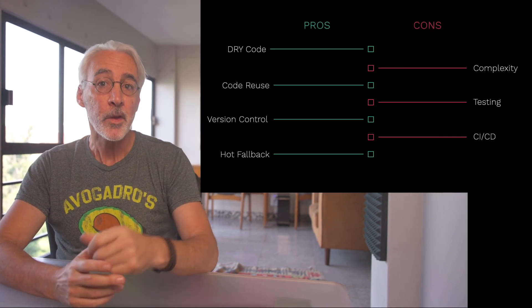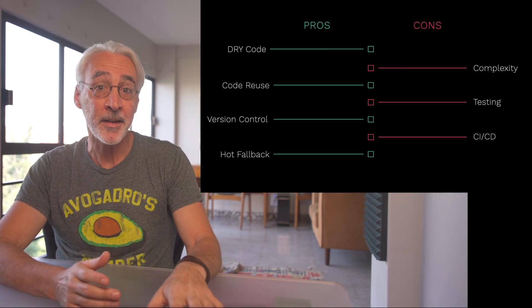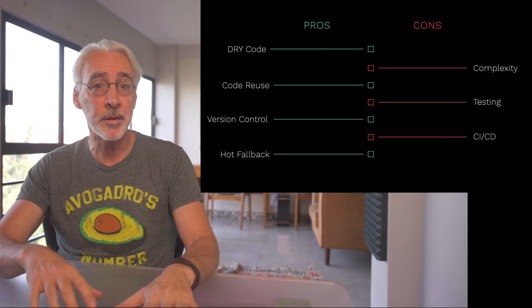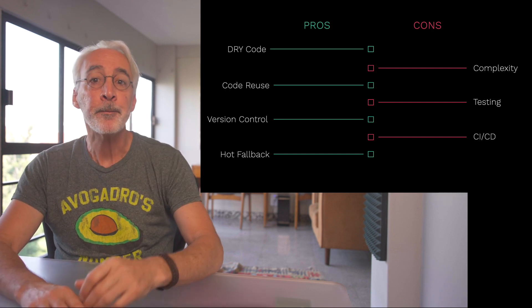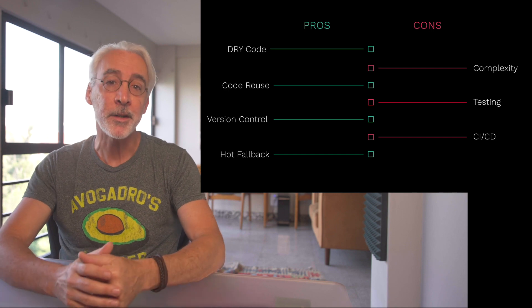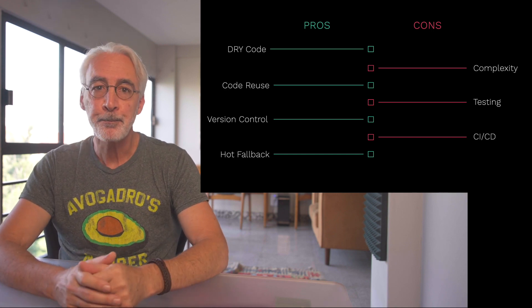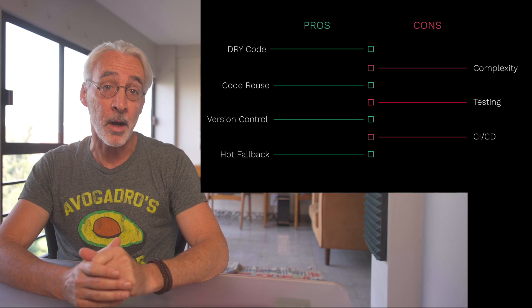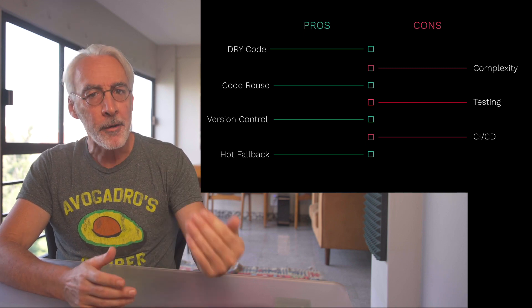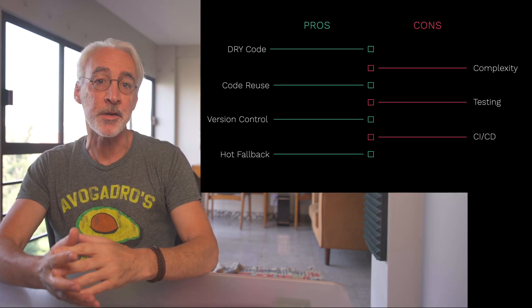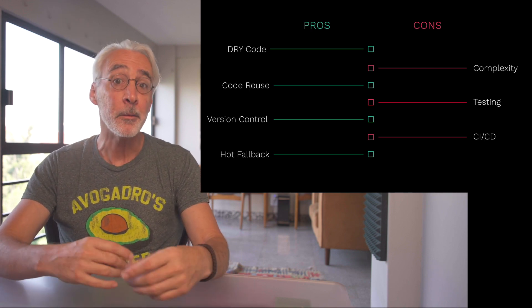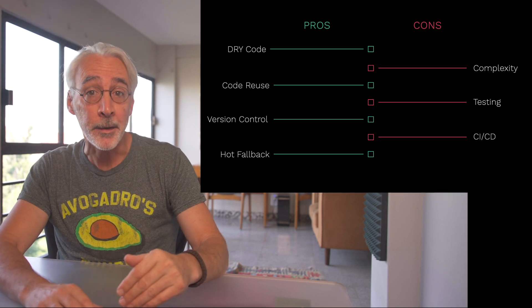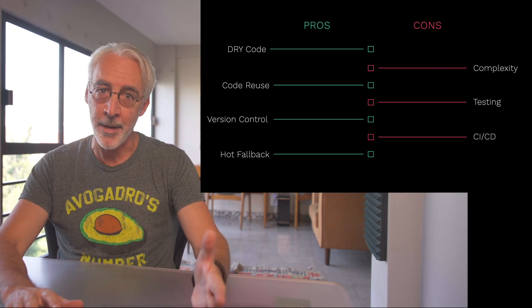So what are the trade-offs to adding layers to your Lambdas? On the plus side: multiple Lambdas can leverage the exact same supporting code, which is cleaner and should lead to more predictable behavior and less problems in general. Code reuse means my common code is now being used by two Lambdas. You also get improved version management of third-party code libraries, plus a fallback mechanism to previous layer versions in the event of post-deployment issues.